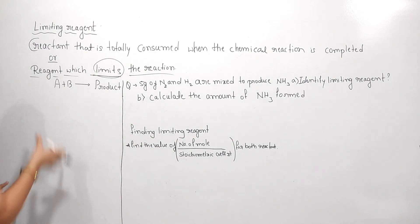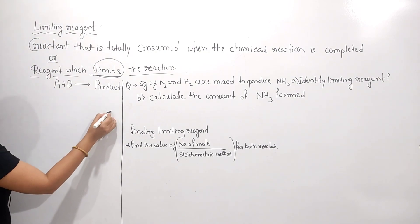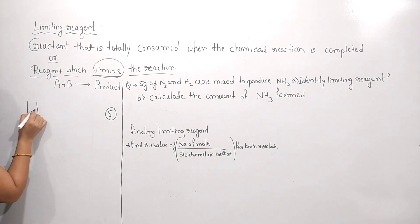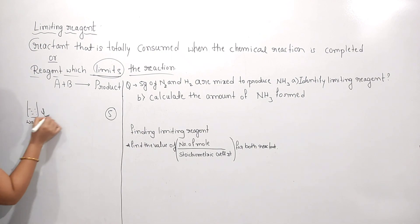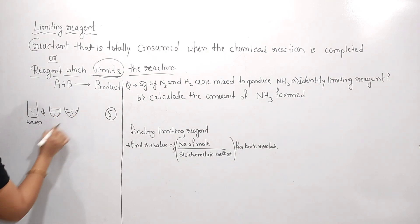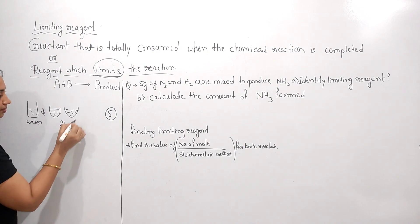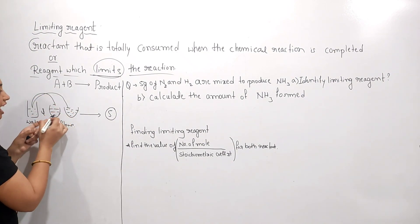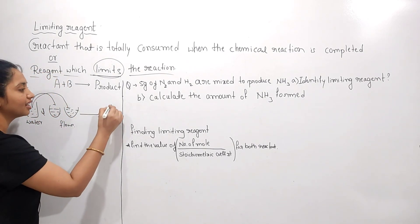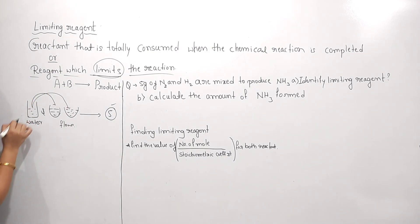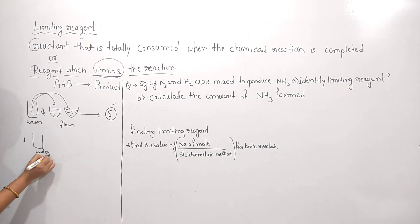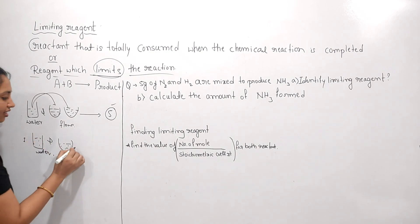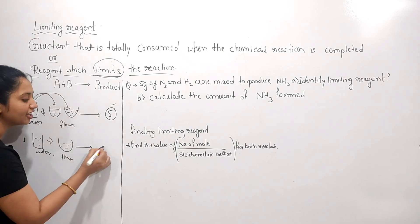To understand limiting reagent, let me give a day-to-day example. Suppose I want to make five rotis. To make five rotis, I need one glass of water and two balls of flour. Using one glass of water poured into two balls of flour, I mix them together to make a nice dough, and from that dough I can make five rotis. But now if I take one glass of water and only one bowl of flour, can I make five rotis? No.